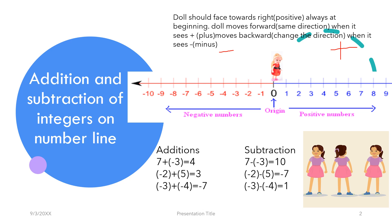Now take the first addition: 7 + (-3). The doll first sees 7, so the doll should move to 7. And here is plus, so when the doll sees plus, she has to move towards the right side. Then it has minus 3, so the doll moves towards the left — 3 times. Because we have 7 + (-3), the doll should stay at 4. That means the result is 4.